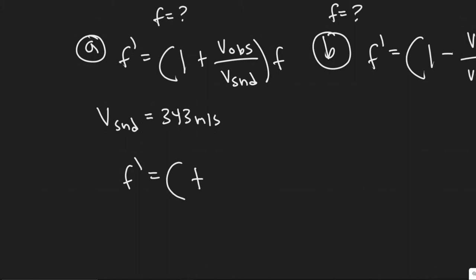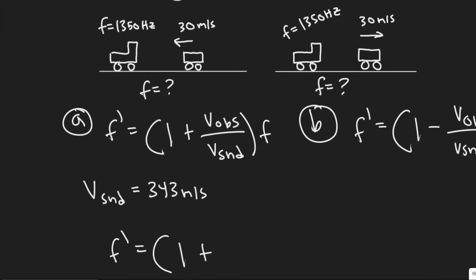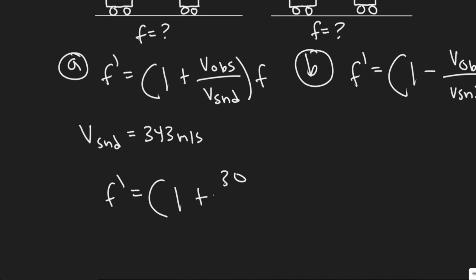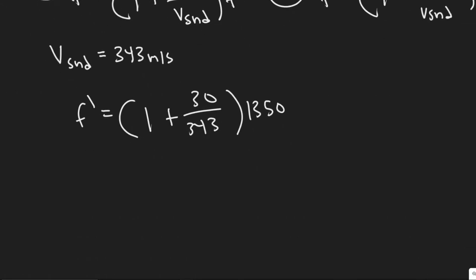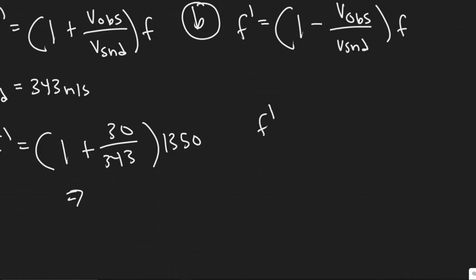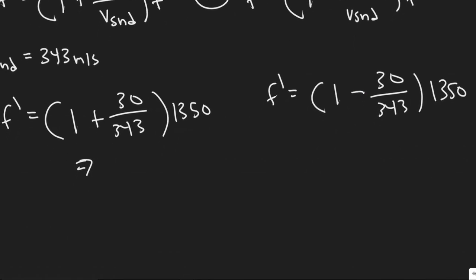So we have 1 plus the velocity of our observer, which we said was 30, plus 343 multiplied by 1350. So we'll figure that out in a second. Let me write it out for this one, too. So we have 1 plus 30 over 343 multiplied by 1350. Or sorry, this is a plus. I don't know why I wrote plus. It's minus. Minus. All right, don't make that mistake. So minus here, plus there.